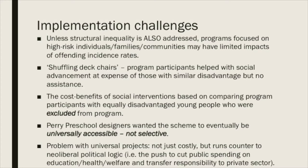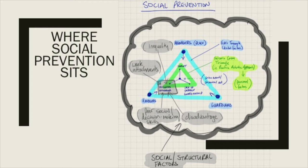The cost-benefits of social interventions are calculated by comparing program participants with equally disadvantaged people excluded from the program — essentially comparing doing something with doing nothing at all. The designers of the Perry Preschool project wanted the scheme to eventually become universally accessible, not just selective. But the problem with universal projects is not just that they're costly; they also run counter to contemporary neoliberal political logic — the push to reduce public spending and offload more responsibility to the private sector.